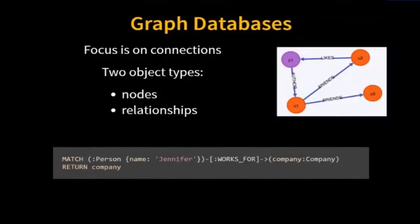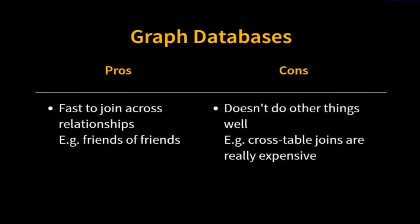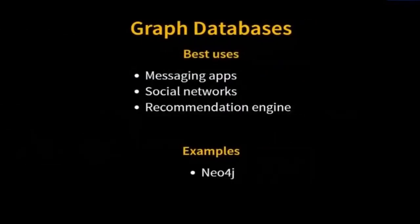Next, let's look at graph databases. With a graph database, we have not only nodes but also relationships between nodes. We have a really elegant syntax for querying through these graph databases and navigating relationships. I can store data not only on nodes but also on the relationships. How is this different from a SQL table with two foreign keys? It's about the query syntax — being able to navigate those joins really easily. A graph database is great for navigating relationships, but it's really tuned for that experience, so cross-table joins are not very performant. Graph databases are best used for messaging apps, social networks, or recommendation engines — something where you need to navigate between relationships.